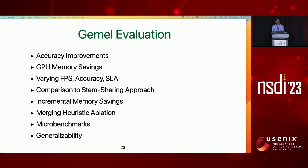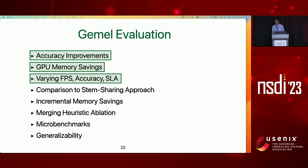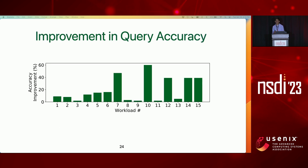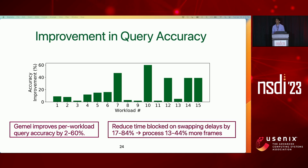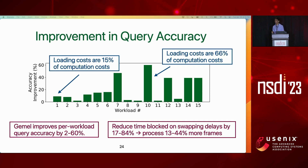We evaluated GEMO on 15 different workloads, each featuring a different subset of camera feeds, architectures, objects of interest, and query types. Comparing GEMO against a baseline swapping system without model merging, we find that GEMO improves accuracy by 2 to 60% when the edge box's GPU memory is just enough to load the largest model in each workload. The origin of GEMO's benefits is the ability to reduce the time blocked on swapping delays, enabling processing on more frames. There is quite a bit of variability across workloads — in workload 10, loading costs are 66% of the computation costs, but only 15% for workload one.